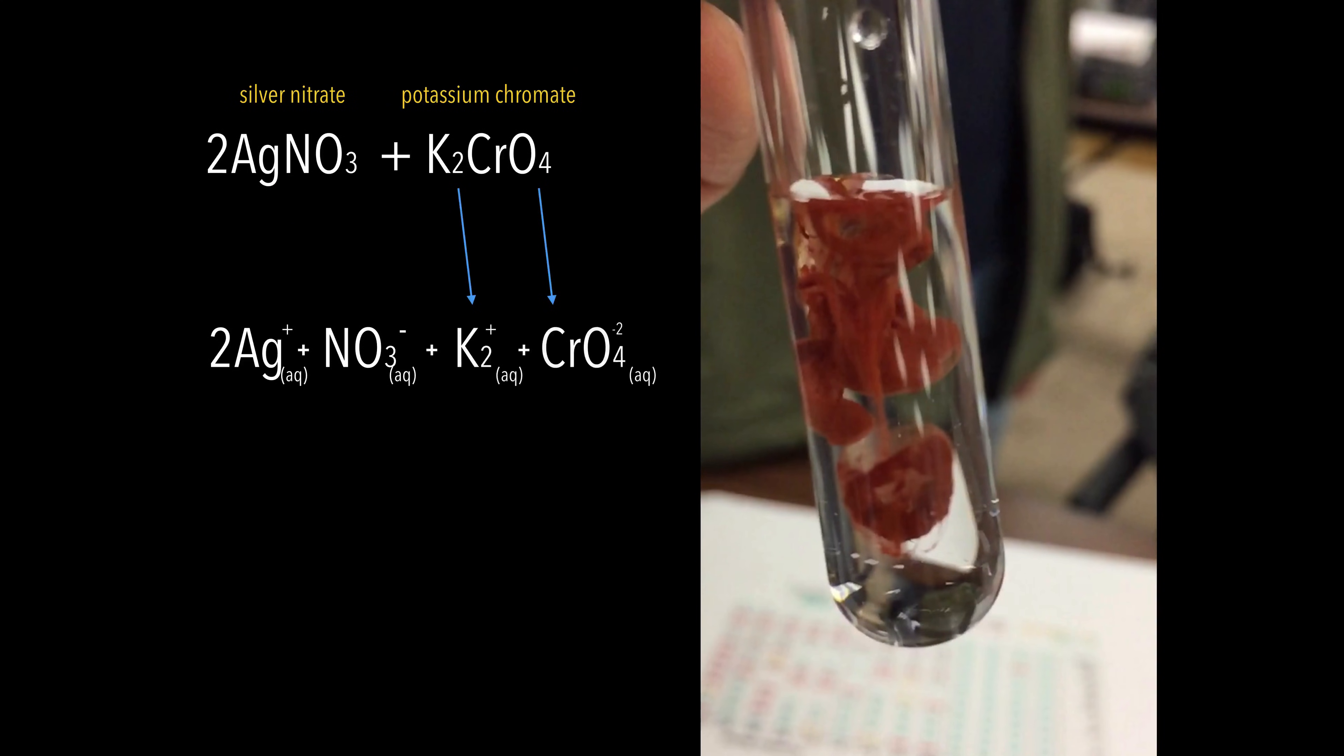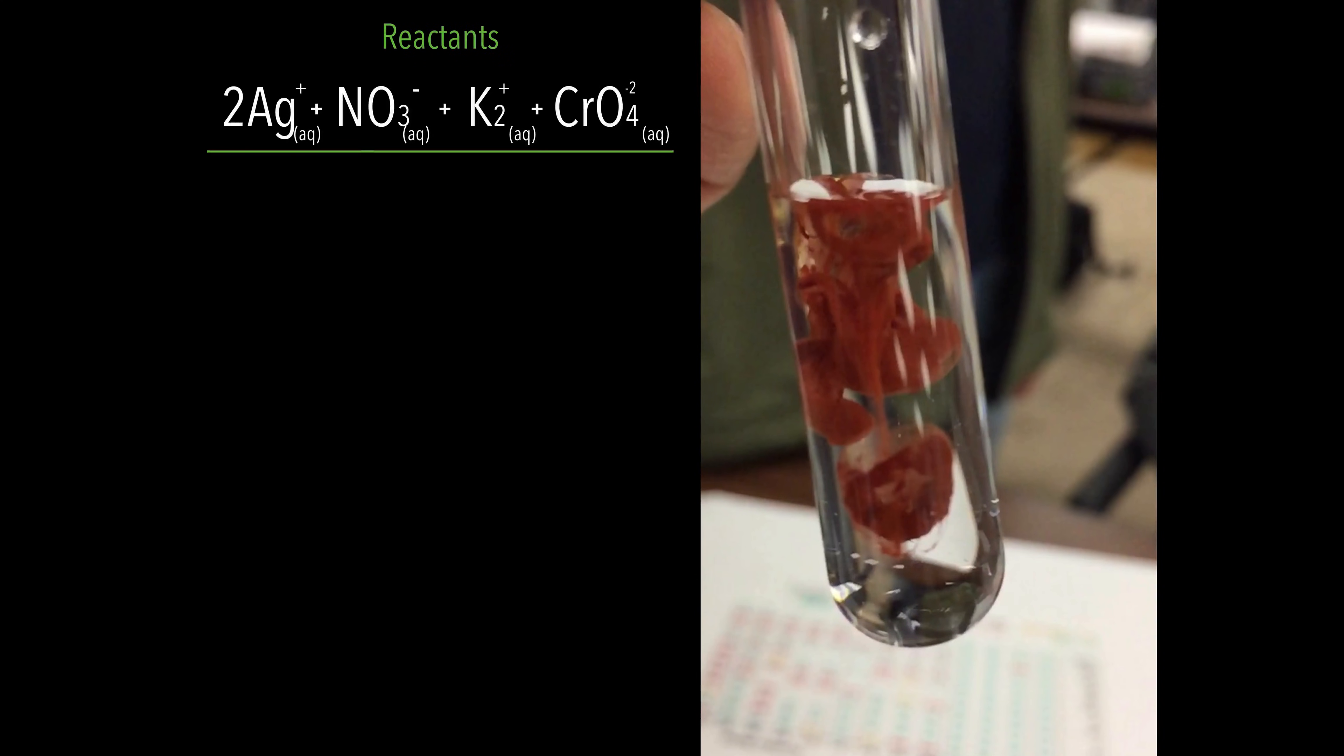Same thing with potassium chromate. Potassium chromate aqueous, they're actually dissociated as well in that yellowish liquid. That's what the reactant side looks like. That's the complete ionic equation for the reactant side.